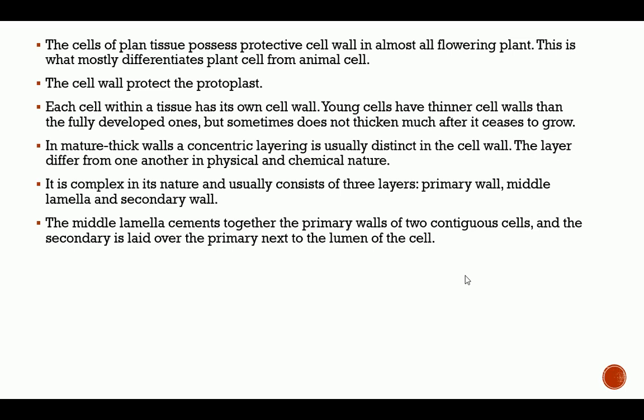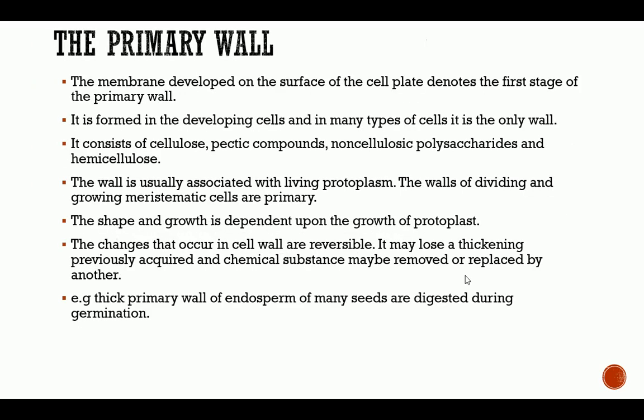The middle lamella cements together the primary walls of two contiguous cells, and the secondary wall is laid over the primary next to the lumen of the cell. The membrane developed on the surface of the cell plate denotes the first stage of the primary wall. It is formed in developing cells and in many types of cells it is the only wall. It consists of cellulose, pectic compounds, non-cellulosic polysaccharides, and hemicellulose, as shown in the image.